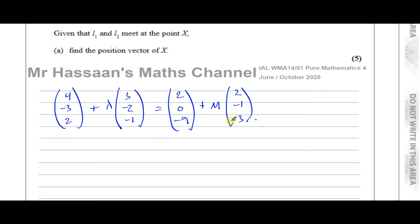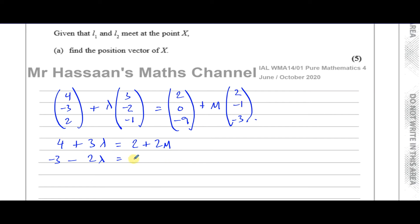I'm going to form one equation for the i component, one for the j component, and one for the k component. So: 4 + 3lambda = 2 + 2mu. And minus 3 minus 2lambda = 0 minus mu, so that's just minus mu. And 2 minus lambda = minus 9 minus 3mu.